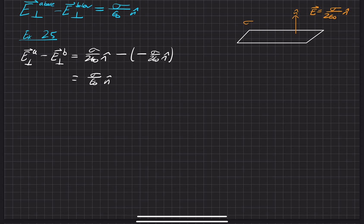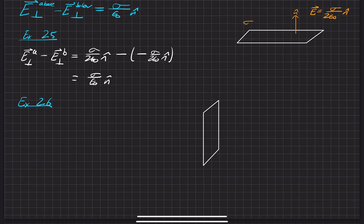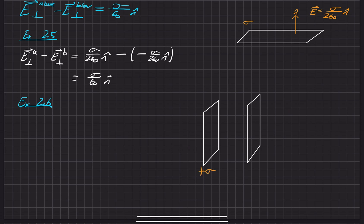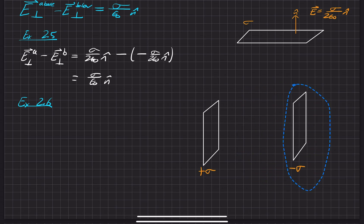Moving on to the next example we need to verify this for: example 2.6. This one is a little different. We have two infinitely long planes, and our goal was to find the electric field relationship between three regions. Importantly, one plane had a positive charge density and one had a negative charge density.